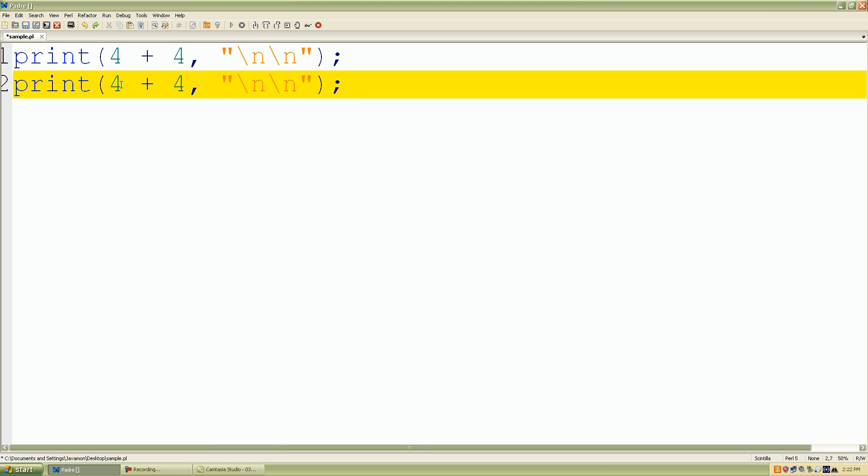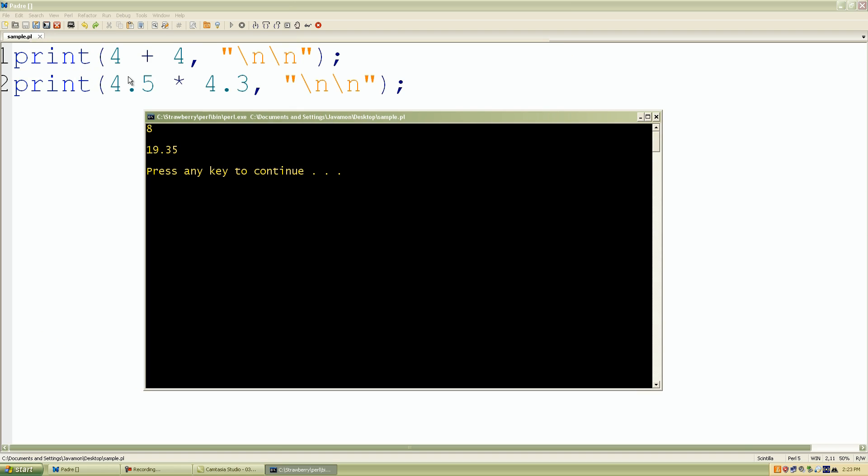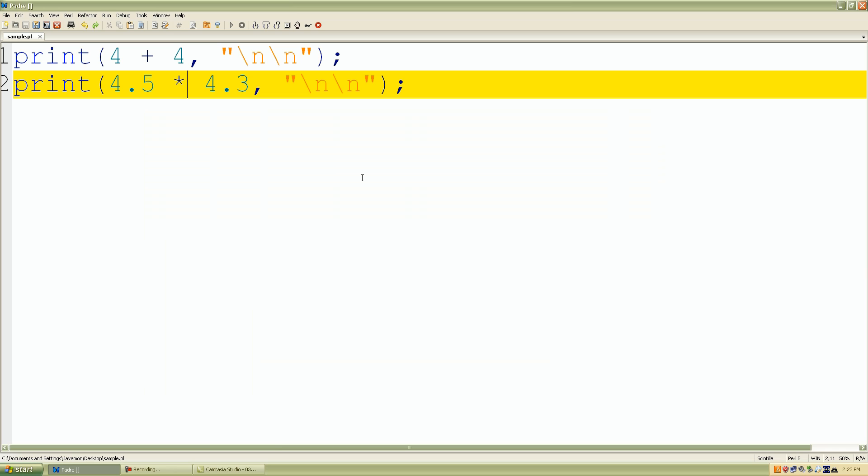So if I do 4.5 plus 4.3, but I change the plus sign to the multiplication sign, let's see what happens. So as we see, 4 plus 4 is 8, and 4.5 times 4.3 equals 19.35. So that looks a lot nicer.